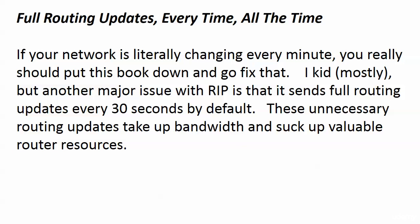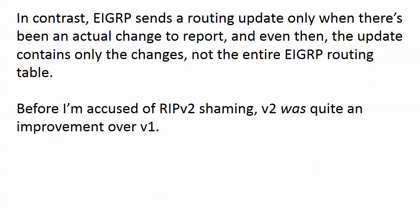Everything we do on a router or switch has a little bit of a cost, and we don't want the cost of a full update every 30 seconds. If you have 200 RIP routes to advertise, they're not all going to fit in one packet — I believe it's 25 per packet, so that would be eight RIP update packets just to contain every route. Not an efficient way to go about business. EIGRP sends a routing update only when there's been an actual change, and even then the update contains only the changes, not the entire routing table — that's a pretty good enhancement. OSPF handles things differently but is also much more efficient than distance vector protocols.